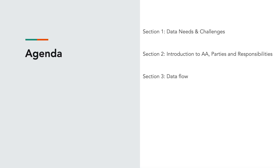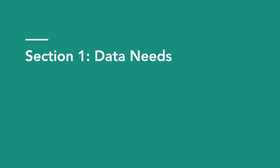This video is split into three sections. In the first section, we are going to talk about the various products offered by financial institutions and the data needs for them. In the second section, I am going to give an introduction about account aggregators and the various parties involved and their responsibilities. In the third section, we are going to talk about the data flow in case of account aggregators. Now let's move into the first section.